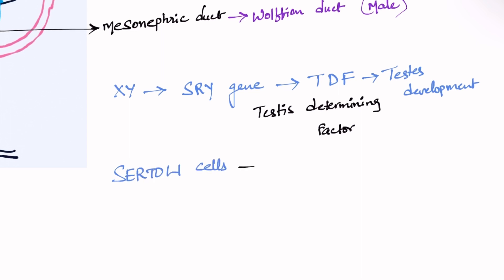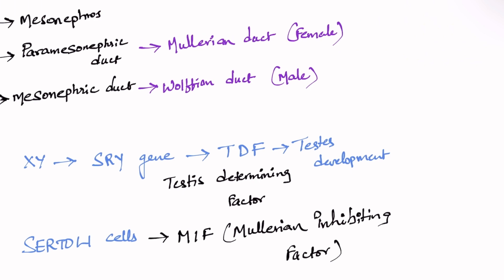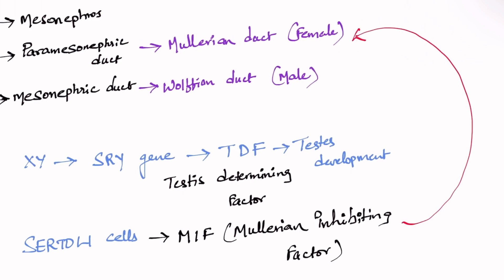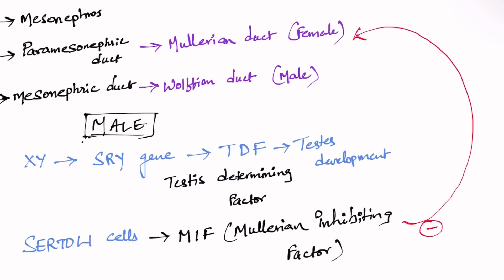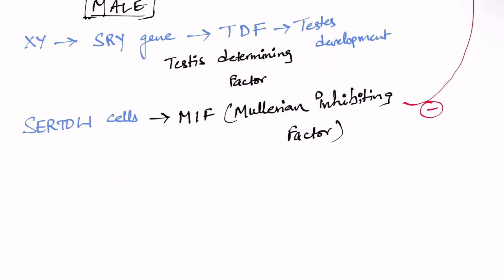Coming to male gonadal development, Sertoli cells are present. These Sertoli cells secrete Mullerian Inhibiting Factor. The name itself says it inhibits the Mullerian duct — that means it suppresses the development of the paramesonephric duct. So the mesonephric duct will develop instead. In males: XY, Y chromosome, SRY gene, and Sertoli cells secreting Mullerian Inhibiting Factor.